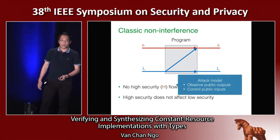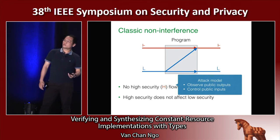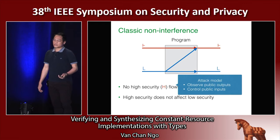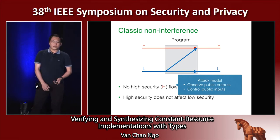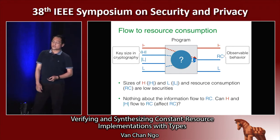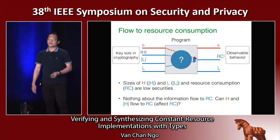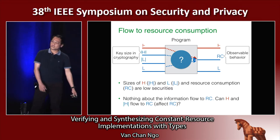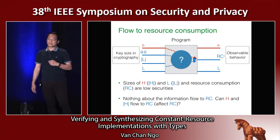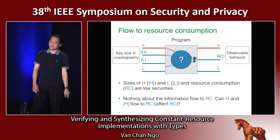If we consider an attacker who can observe the public output and control the public input of the program, and if the program satisfies the non-interference property, then it is secure against this attacker. However, in practice, the size of the high security or the low security data are public information, and the resource consumption of the program is observable — that means they are low security. And the non-interference property says nothing about the information flow to the resource consumption.